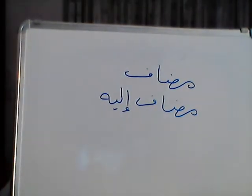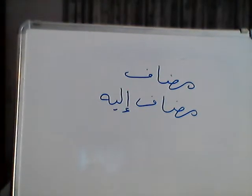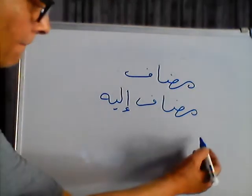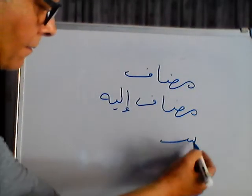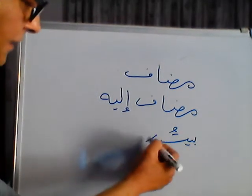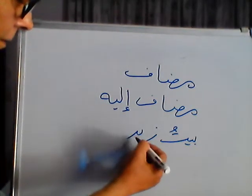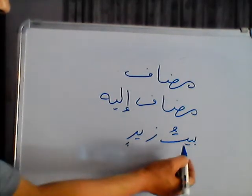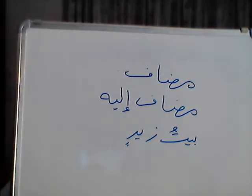The first noun is called Muzaf and the second is called Muzaf Ilay. As in the example 'Baitu Zaydin,' Bait is Muzaf and Zayd is Muzaf Ilay.